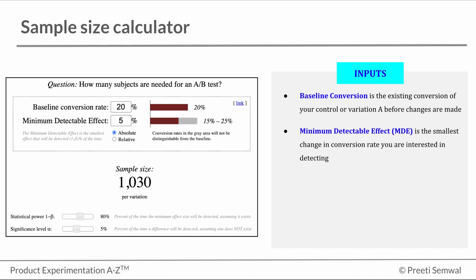Minimum detectable difference, or MDE, which is the smallest change in conversion rate that you are interested in detecting.